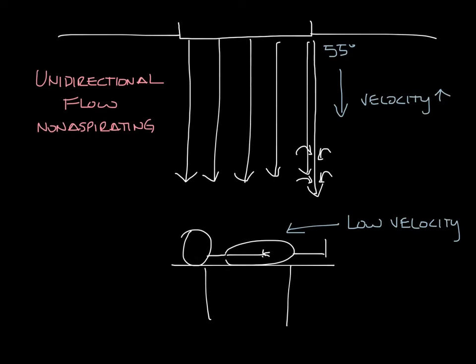You want the velocity just below the unidirectional diffuser to be 25 to 35 feet per minute, so that by the time it gets to the patient it's about 50 feet per minute.